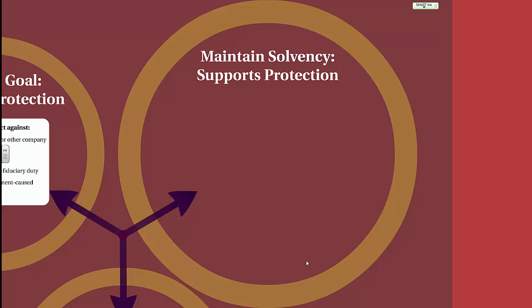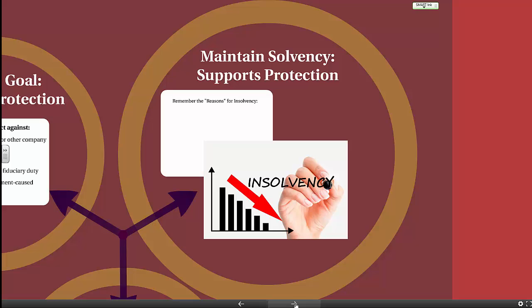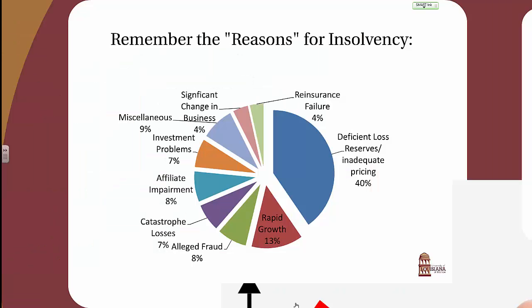Another reason for regulation is to maintain solvency, which supports protection of the consumer. This is the requirement that an insurance company can continue to meet its liabilities, which are legitimate claims for insurance coverage. Reasons for insolvency include deficient loss reserves and inadequate pricing — insurance companies must set aside money to pay for losses that have occurred but not yet been reported, making their best guess at how much to reserve. Additional causes include overly rapid growth, fraud, catastrophe losses, impairment of an affiliate, investment problems, significant changes in business, and reinsurance failure — all aspects that an insurance department must monitor.